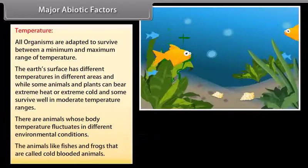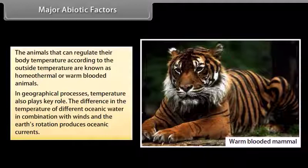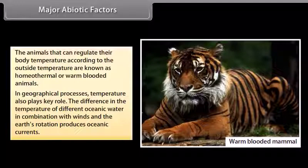Animals that can regulate their body temperature according to the outside temperature are known as homeothermal or warm-blooded animals. In geographical processes, temperature also plays a key role. The difference in the temperature of different oceanic water, in combination with winds and the earth's rotation, produces oceanic currents.